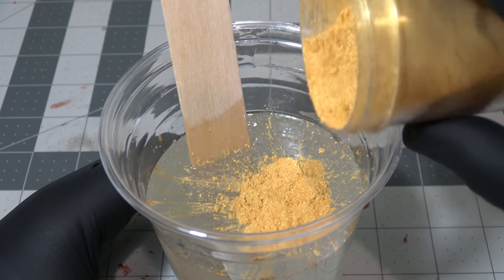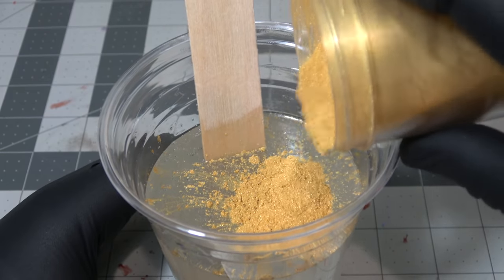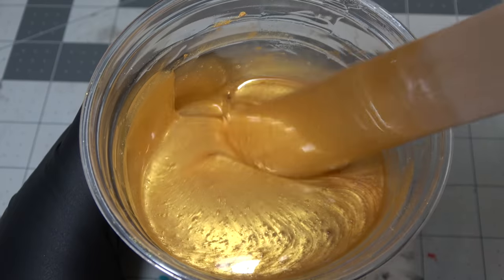After mixing the resin, I add enough gold mica powder to where you'd think I have a king's bounty. Get it? King's bounty? Chess? I'm funny.